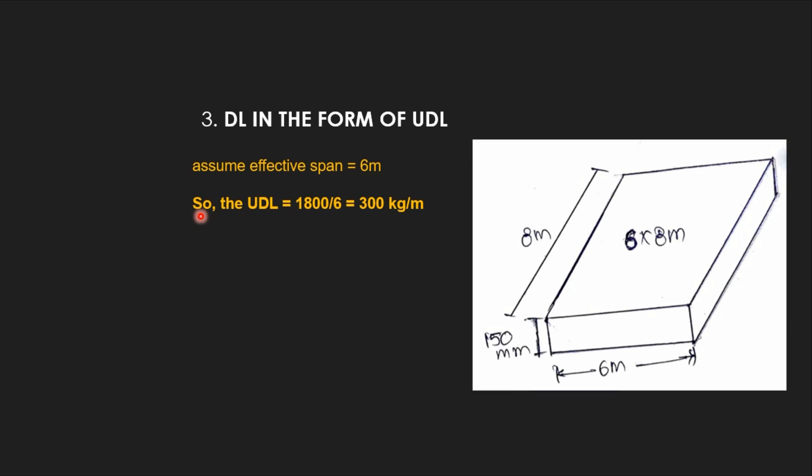Assume the effective span of slab as 6 meters. Therefore, UDL equals total dead load of the slab divided by 6, that is effective span. Dead load in the form of UDL equals total dead load divided by effective span, which gives us 300 kg per meter. This is in the form of UDL.